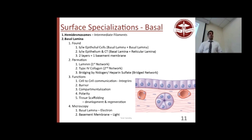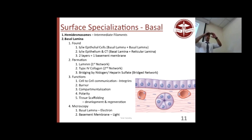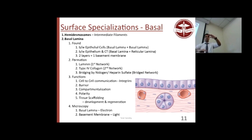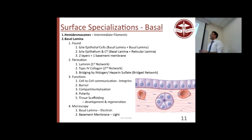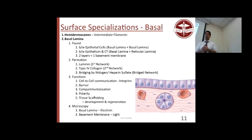Hemidesmosomes are found on the basal side and anchor the epithelial layer to the connective tissue underneath. Your hemidesmosomes connect integrins, which adhere to fibronectin, which binds to collagen. The ectoderm becomes epithelium and mesoderm becomes connective tissue; where they fuse is the basement membrane. The basal lamina can't be seen with light microscopy, but the basement membrane can. If epithelium isn't anchored to something, it can't reproduce or regenerate — it needs to be anchored to function.